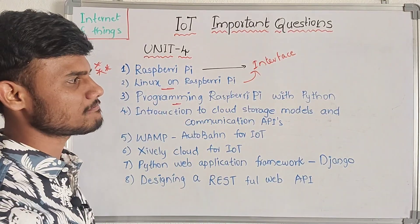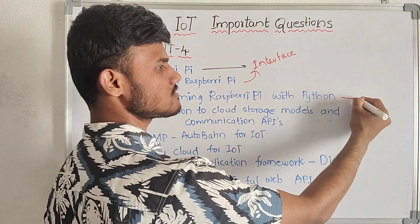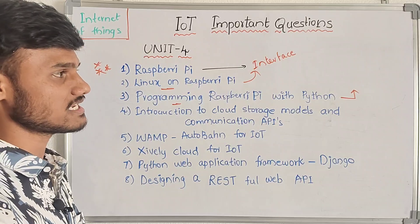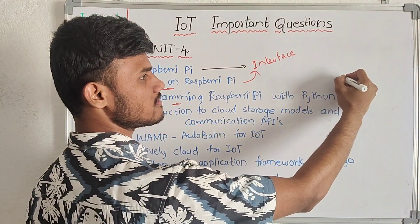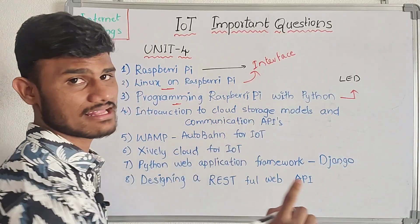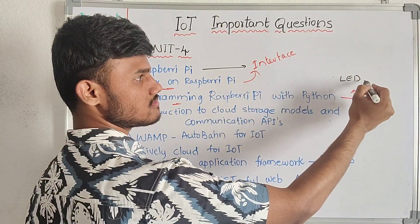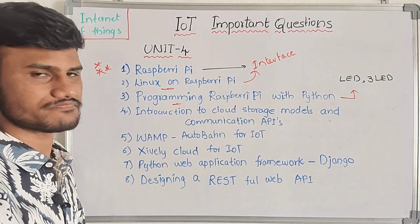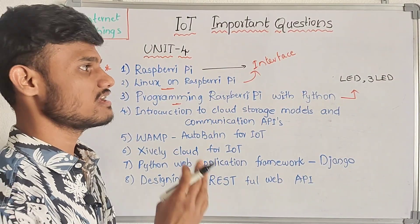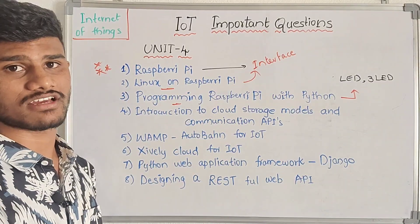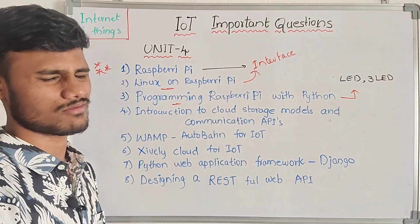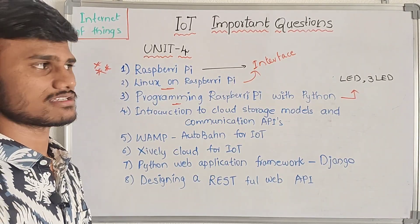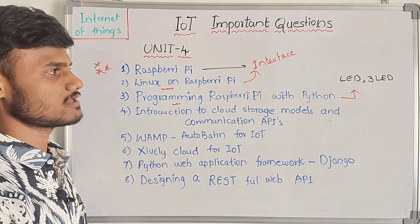Next is programming Raspberry Pi with Python. If we use Python, we can connect it with Raspberry Pi. The best example is LED light — LED switching light and 3-LED. You need to write a piece of code for this program. You need to do a lab for the external exam.